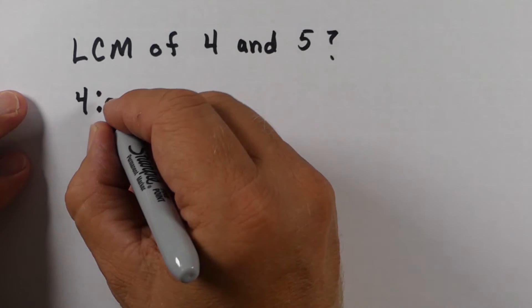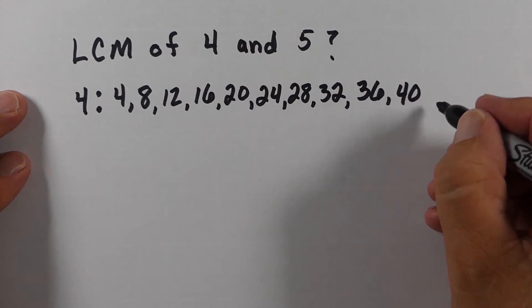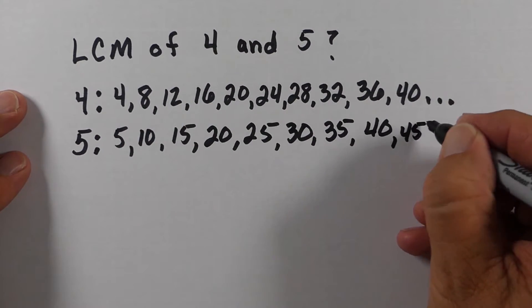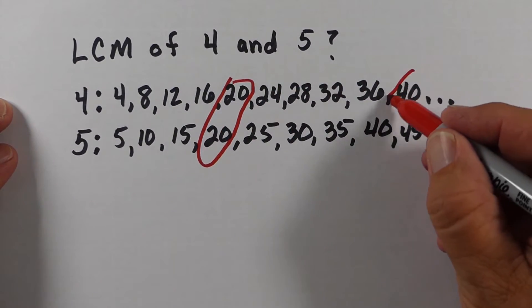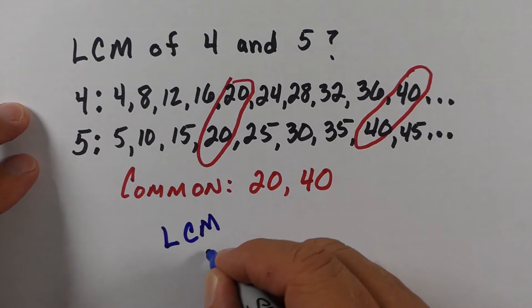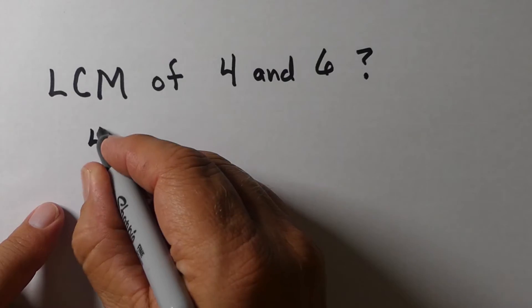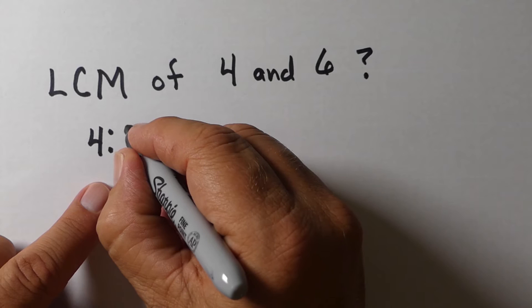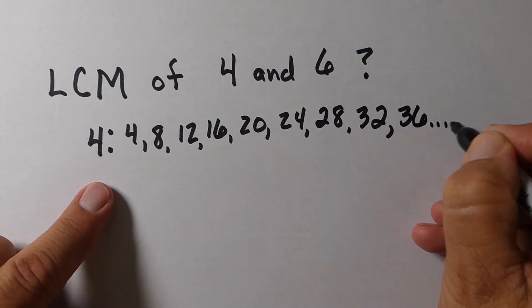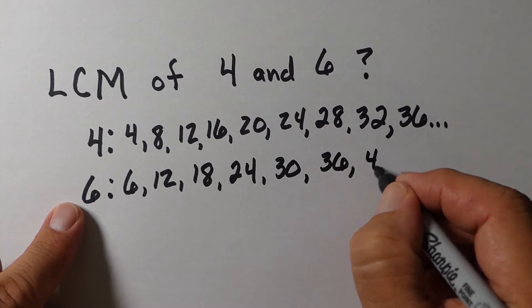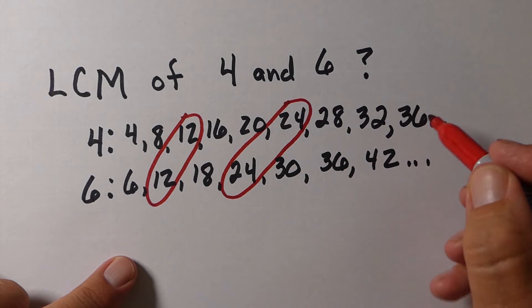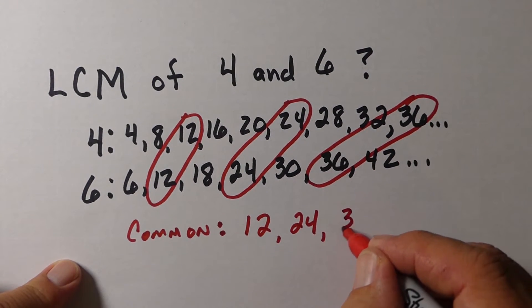Now let's look at five and four. We find the multiples of four — four, eight, twelve, multiplying by one, by two, by three, and so on — and the same for five. The ones they share in common are twenty and forty; the next one they'd share would be sixty. The least common multiple is twenty. Here's another one — the least common multiple of four and six. Sometimes people try to just multiply four and six to get the answer, but in this case that wouldn't work because twelve is actually the least common multiple.